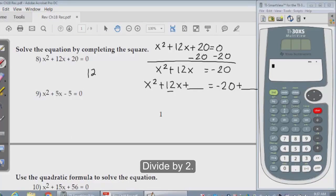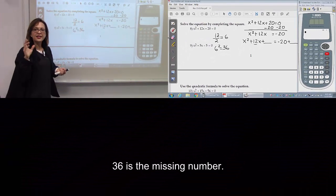Divide by 2. Now square. 36 is the missing number.